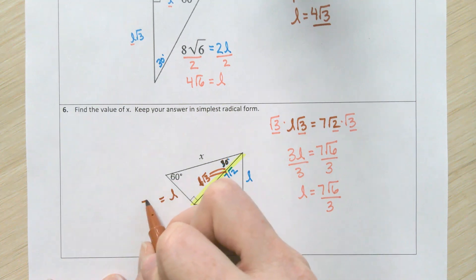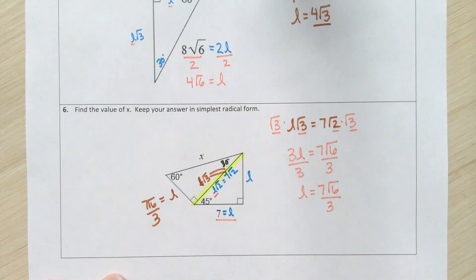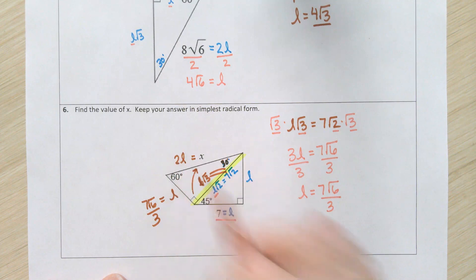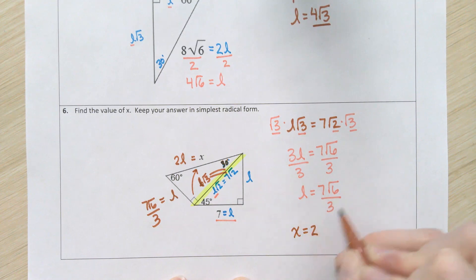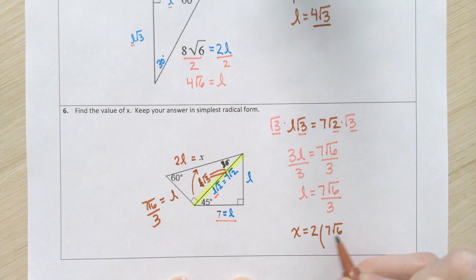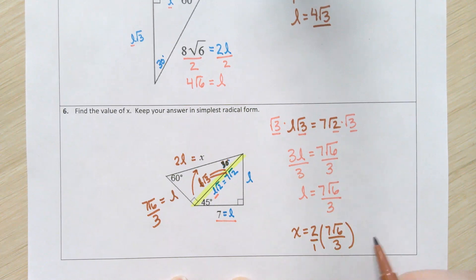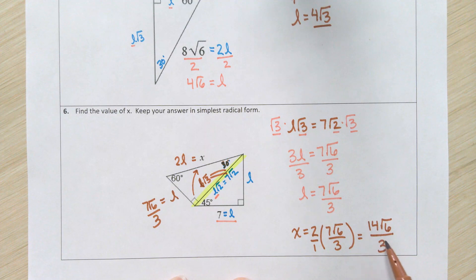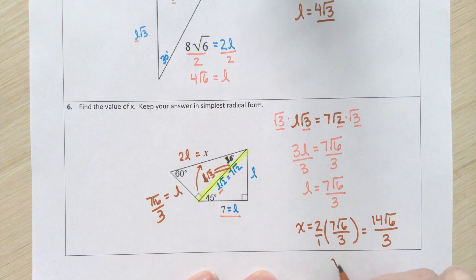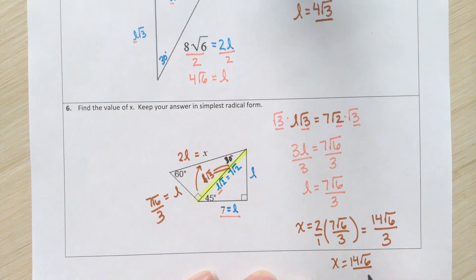That would be great if our goal were the shortest side, but it's not. Our goal is the side across from 90 in the 30-60-90, which is 2L. So X equals 2 times 7 root 6 over 3. Multiplying straight across gives 14 root 6 in the numerator and 3 in the denominator. 14 still can't be divided by 3 evenly, and root 6 still can't be simplified, so X equals 14 root 6 over 3.